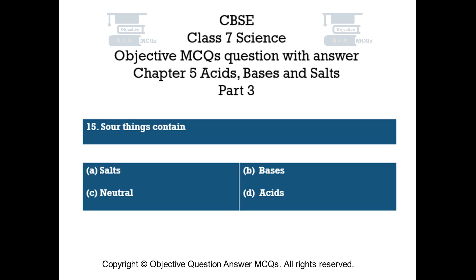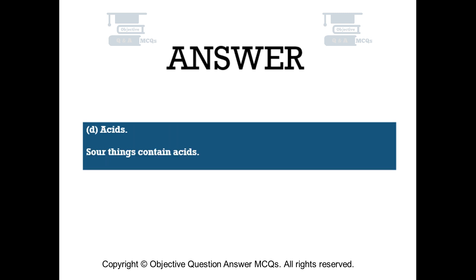Question number 15: Sour things contain. Option A: salts. Option B: bases. Option C: neutral. Option D: acids. The right answer is option D — acids. Sour things contain acids.